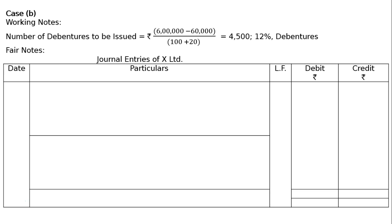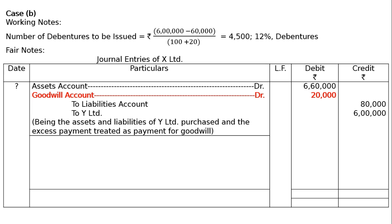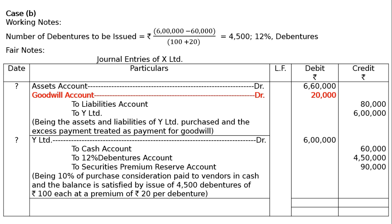Journal entries of X Ltd for Case B. The first entry is the same as Case A. For the second entry: Vendor's account debited Rs. 6,00,000; to Cash account Rs. 60,000 (10% paid in cash); to 12% Debentures account Rs. 4,50,000; to Securities Premium Reserve account Rs. 90,000. Narration: being 10% of purchase consideration paid to vendors in cash and the balance satisfied by issue of 4,500 debentures of Rs. 100 each at a premium of Rs. 20 per debenture. Journal totals: Rs. 12,80,000 on both debit and credit columns.